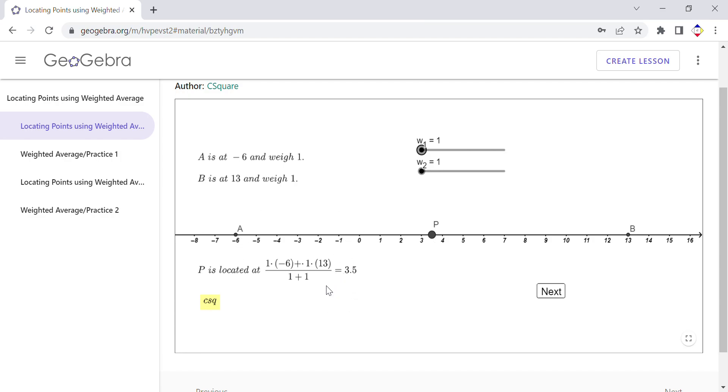You have here the formula that I presented in the video lesson. Please check my video lesson also on my YouTube channel. I'm going to click Next here. This is a very similar activity, a very similar app. The only difference is we have three points, three different weights.